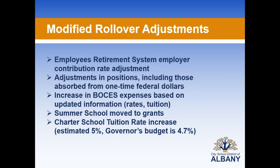Modified rollover adjustments since we last met include the employees' retirement system employer contribution rate adjustment, adjustments to positions including those absorbed from one-time federal dollars, adjustments in our BOCES expenditures based on updated rate information and tuition. We have switched summer school to grants for summer of 2022, and we have learned from the Governor's budget proposal that our charter tuition rate increase estimated originally at 5% is expected to be 4.7%, so we have made that corresponding adjustment.